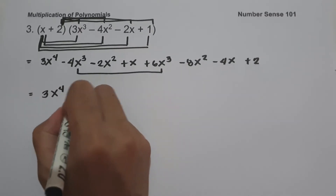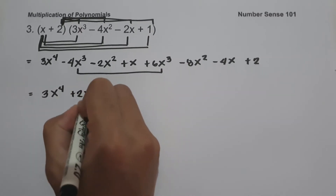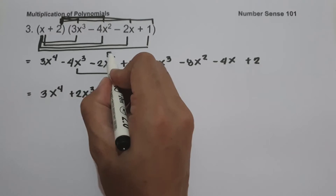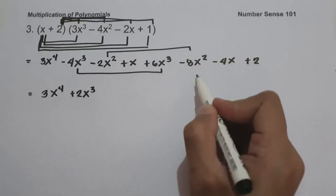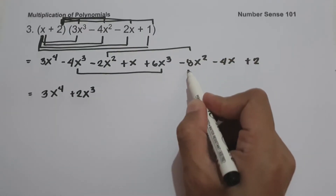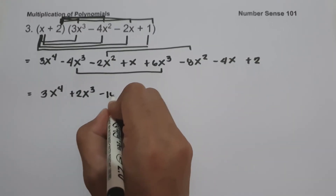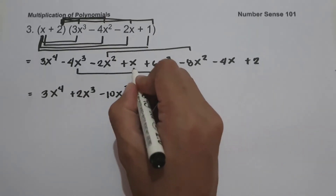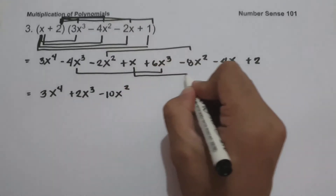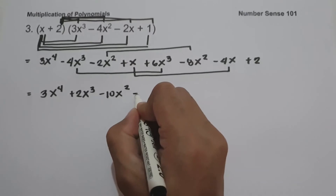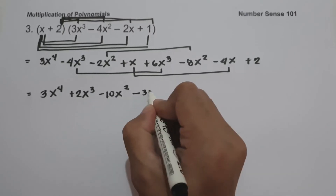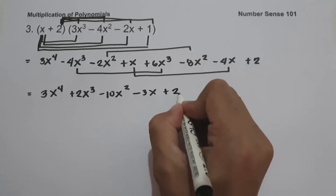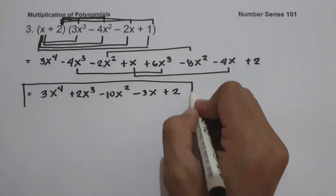2x cubed. Then negative 2x squared minus 8x squared is negative 10x squared. Then x minus 4x is negative 3x. And then plus 2. This will be our answer.